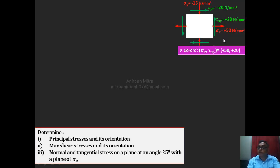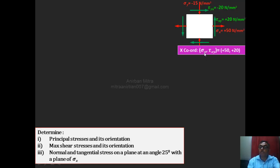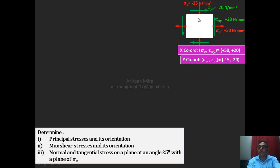First, the X coordinate — I suggest you try to draw it in a rough diagram first and then plot it on graph paper. The X coordinate is sigma X, which is positive, and tau XY is also positive, so the X coordinate is plus 50, plus 20. The Y coordinate is sigma Y and tau YX. Sigma Y is negative 15, and tau YX is also negative 20, giving us the Y coordinate.